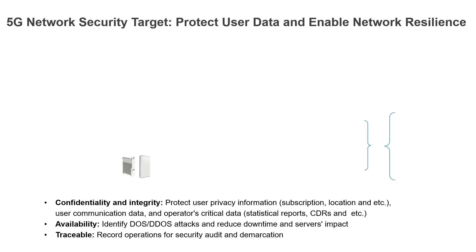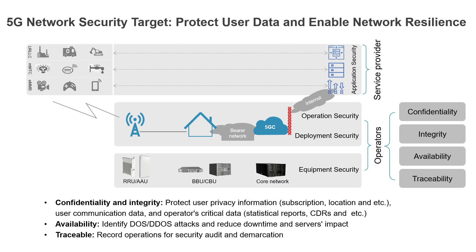Let us start. If you look at 5G network security, what is our target — what are we trying to protect? Basically, we are protecting user data and enabling network resilience. Whatever our network nodes are processing needs to be secure. By 'data' I mean the keys of the network — public keys, private keys, RSA keys — and in the 5G AKA algorithm we are deriving all the keys from the authentication vectors all the way towards the ciphering for confidentiality and integrity protection.